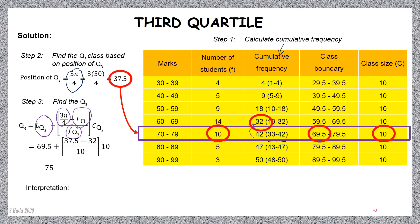How to interpret — back to concept: 75% less than, 25% more than. Therefore, 75% of students scored less than 75 marks, and the other 25% scored more than 75 marks.